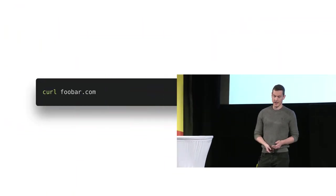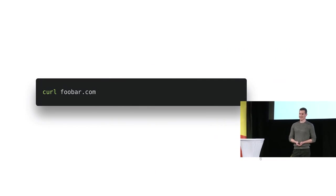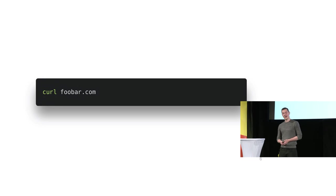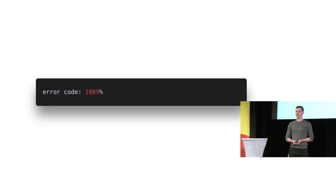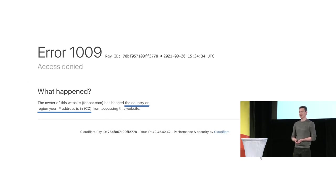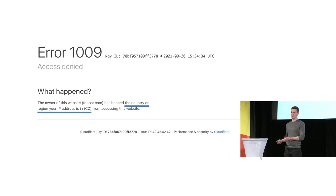So it's not about foobar — this is just a placeholder. How would we scrape it? Just curl it. We had a great talk about curl, so this should work. No. Error code 1009. What does it mean? It's not even an HTTP response. If you open the page in the browser, you will see that it basically says: you cannot access our website from the location you're in — from Czech Republic, no way.